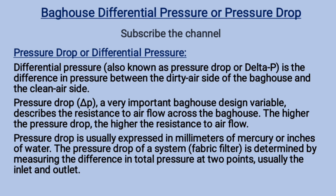The higher the pressure drop, the higher the resistance to air flow. Pressure drop is usually expressed in millimeters of mercury or inches of water. The pressure drop of a fabric filter system is determined by measuring the difference in total pressure at two points, usually the inlet and outlet.